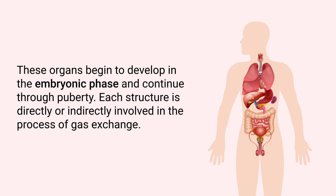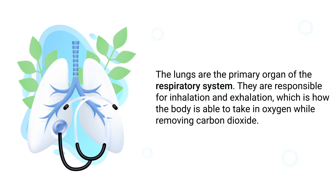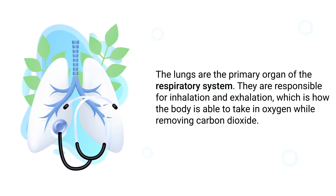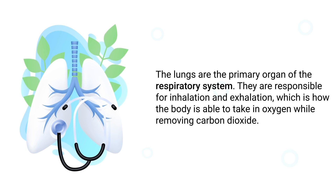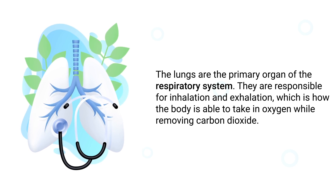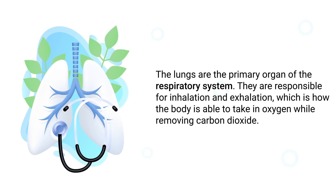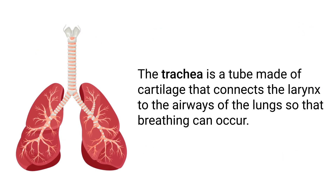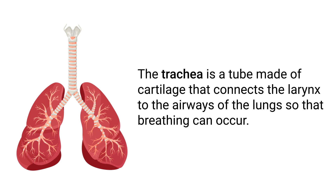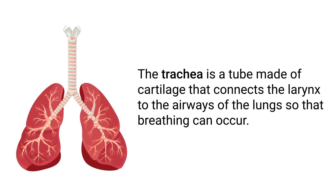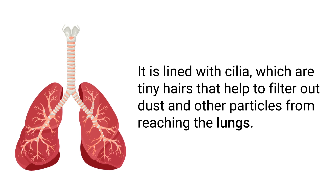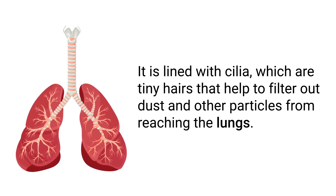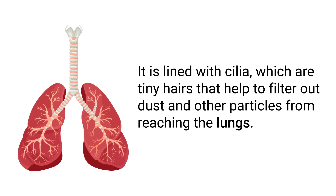First, we have to talk about the lungs. The lungs are the primary organ of the respiratory system, responsible for inhalation and exhalation — how the body is able to take in oxygen while removing carbon dioxide. The trachea is a tube made of cartilage that connects the larynx to the airways of the lungs so that breathing can occur. It is lined with cilia, which are tiny hairs that help filter out dust and other particles from reaching the lungs.